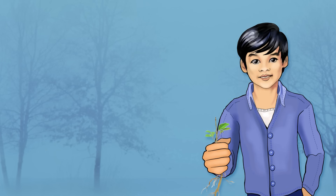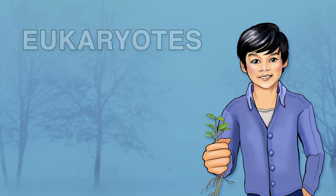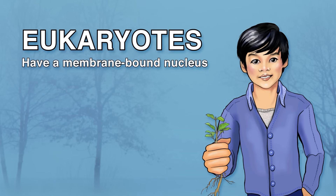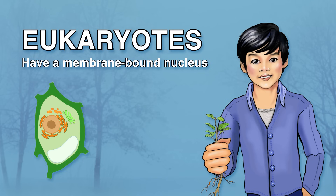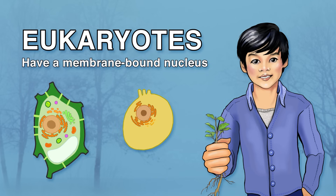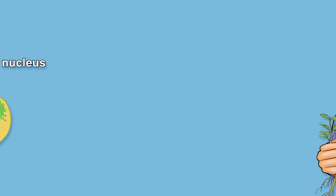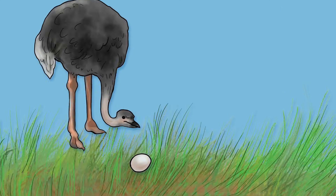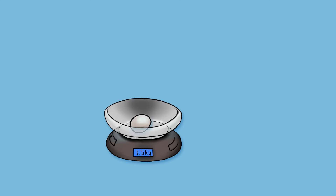Animal and plant cells share many similarities, since they are both eukaryotes, which means that they have a membrane-bound nucleus. Plant cells are often larger than animal cells — well, except for eggs. The largest single animal cell is an unfertilized ostrich egg, which weighs around 1.5 kilograms.